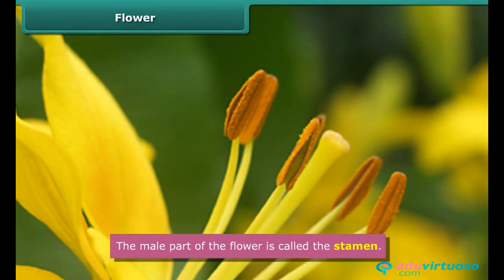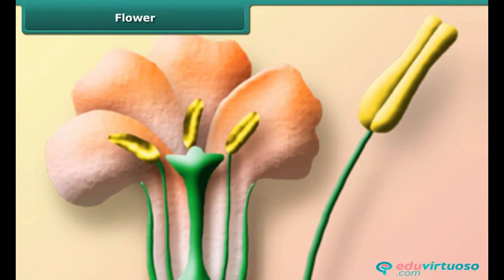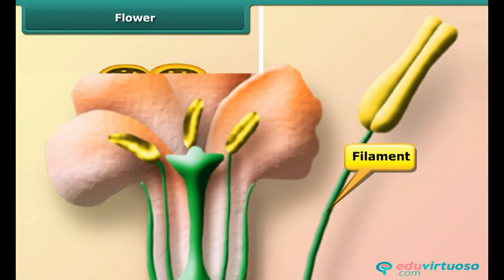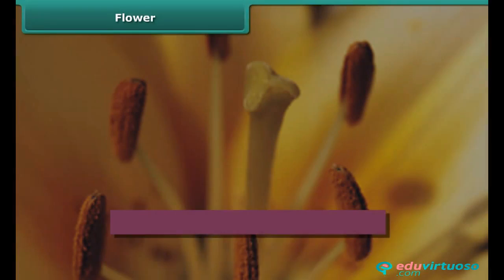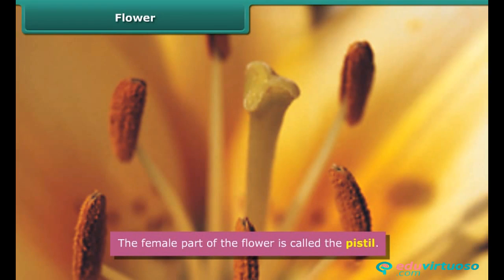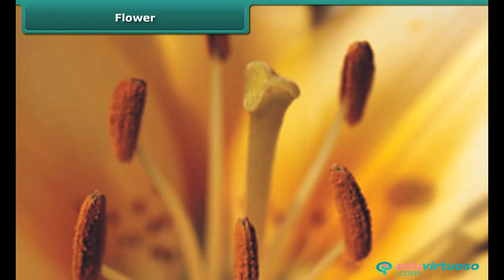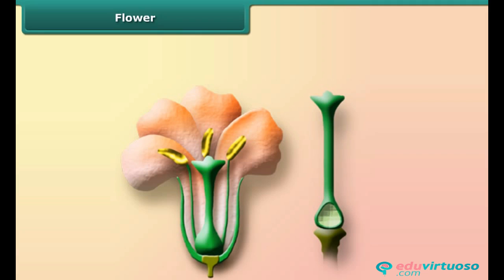The male part of the flower comprises one or more stamens. Each stamen is a stalked structure; the stalk is called the filament. Atop the filament are two sacs containing pollen — these sacs are known as anthers. The female part of the flower is called the pistil. It is the innermost part of the flower. The pistil has three parts: stigma, style, and ovary.